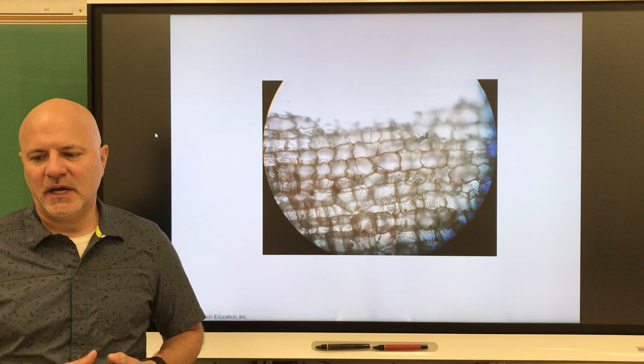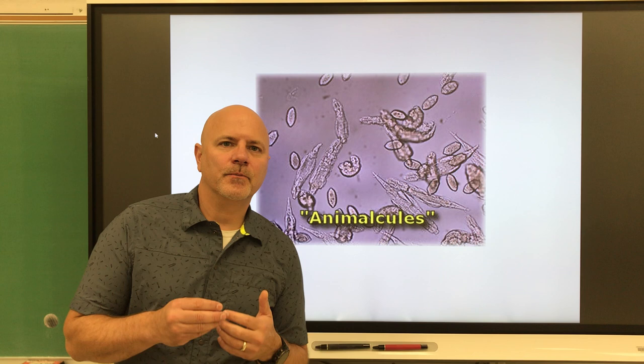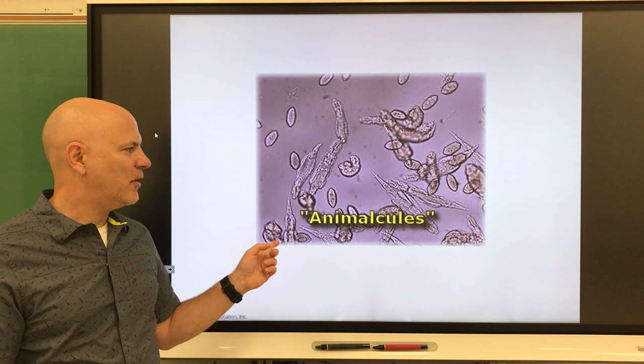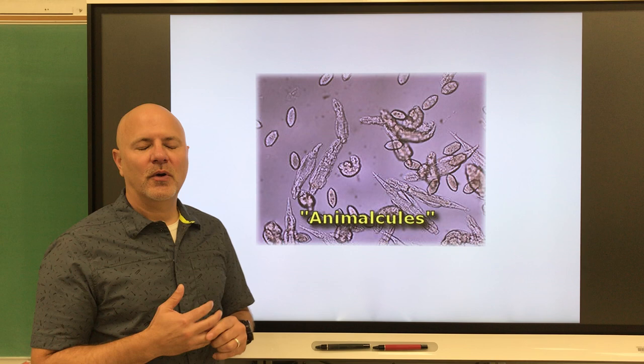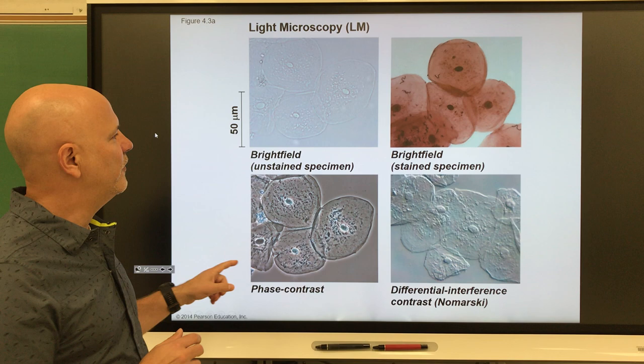Hooke looked at dead cells, so the first person to see live cells was Antoine van Leeuwenhoek, in 1673. Van Leeuwenhoek looked at water from ponds, drainage from around his house, and teeth scrapings, and saw little things moving around that he called animalcules — what we know today as single-celled organisms like protozoans or bacteria.